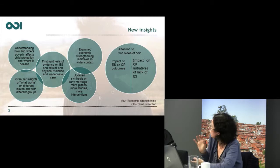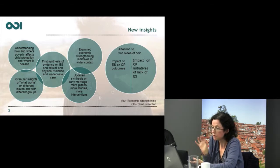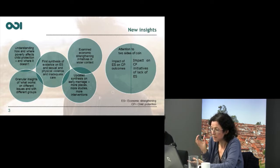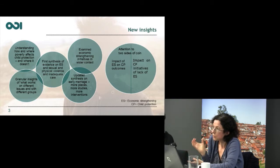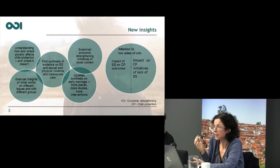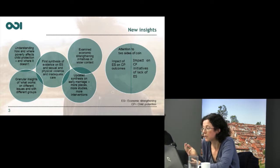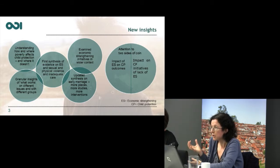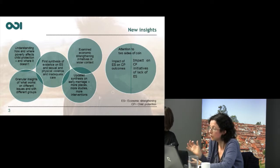We have delved in depth into the different areas of child protection violations and where poverty appears to have an important role and where it doesn't. We've done this through two processes: an in-depth review of literature looking at the relationship between poverty and child protection violations in the areas of physical and sexual violence against children, inadequate care, and early marriage; and through a systematic review of programmes, both those that did and didn't include economic strengthening components to look at where those added value and where they didn't.